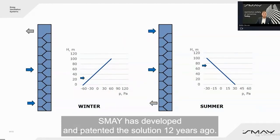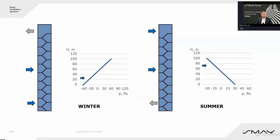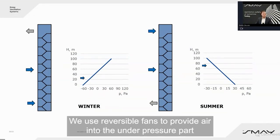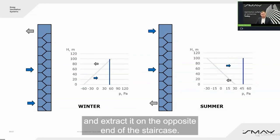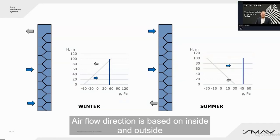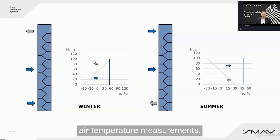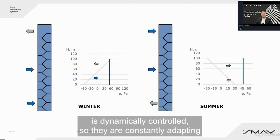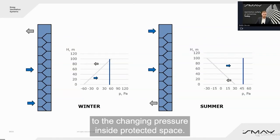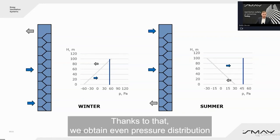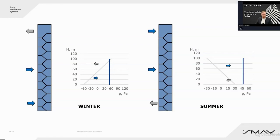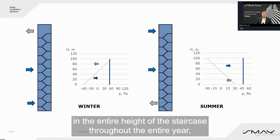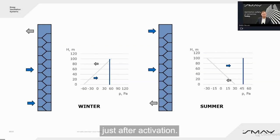Smyah developed and patented a solution twelve years ago. It is quite simple: reversible fans provide air into the underpressure part and extract it at the opposite end of the staircase. Airflow direction is based on inside and outside air temperature measurements. Each fan is dynamically controlled, constantly adapting to the changing pressure inside the protected space, giving us even pressure distribution across the entire height of the staircase throughout the entire year, just after activation.